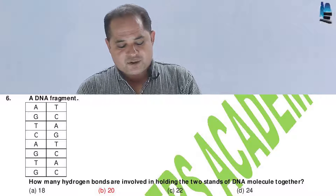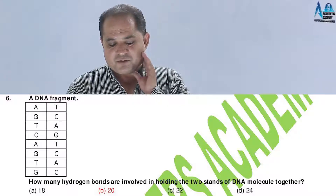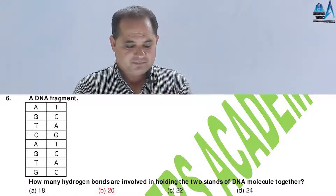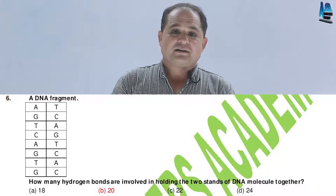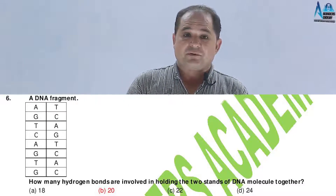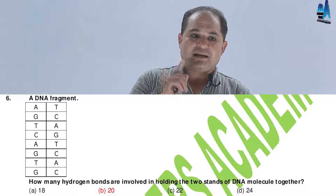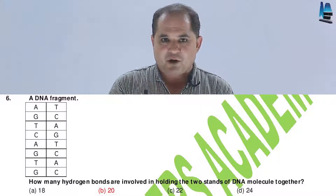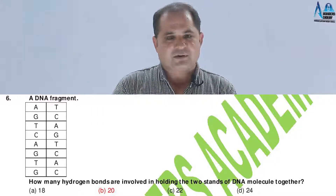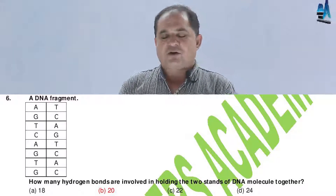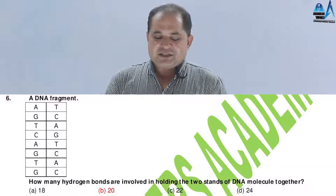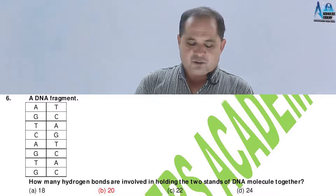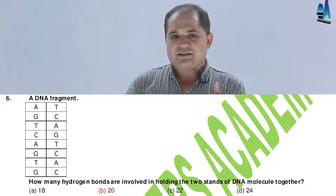How many hydrogen bonds are involved in holding the two strands of the DNA molecule together? You can calculate all the bonds visible. Adenine and thymine have 2 bonds, cytosine and guanine have 3 bonds. Options: A is 18, B is 20, C is 22, D is 24. The answer should be 20 — that is the total number of hydrogen bonds.